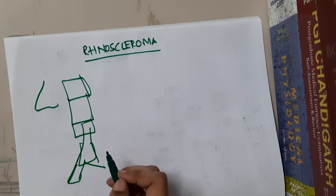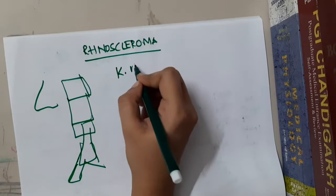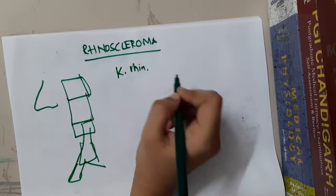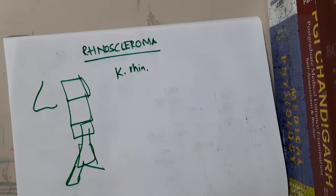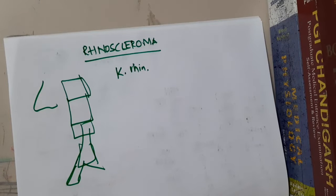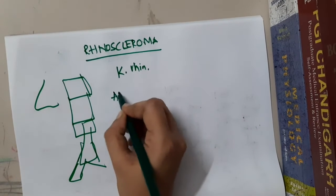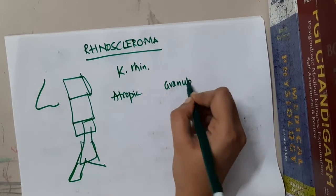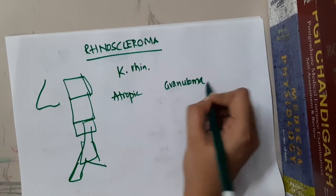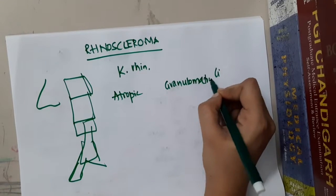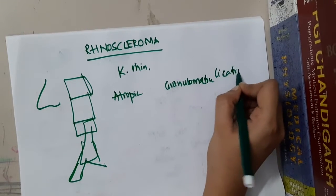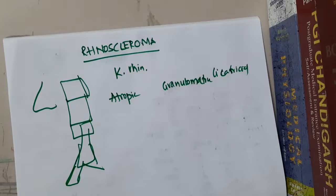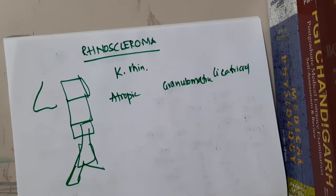Rhinoscleroma is mainly caused by Klebsiella rhinoscleromatis, which is a bacterium. There are three stages: first, the atrophic stage; second, the granulomatous stage; and finally, the cicatricial stage.